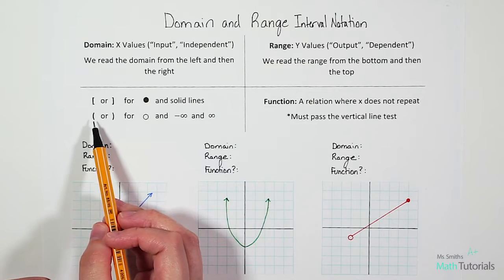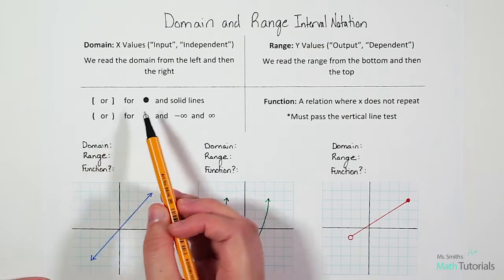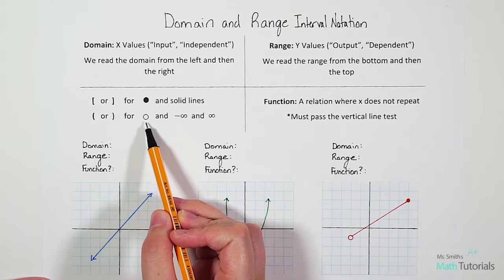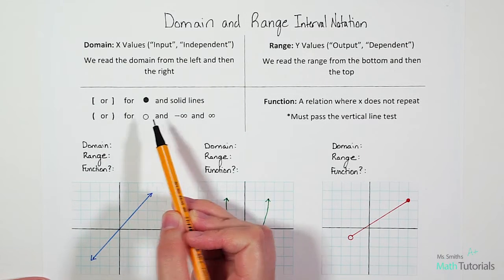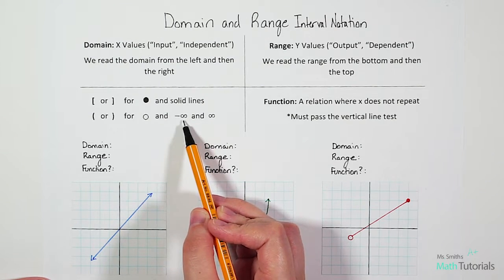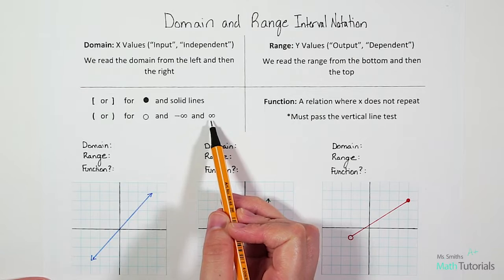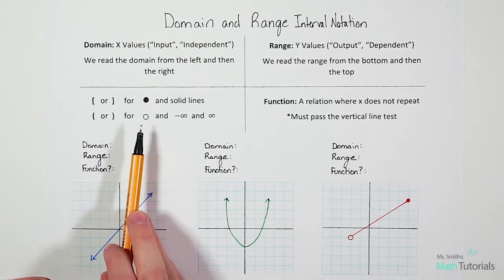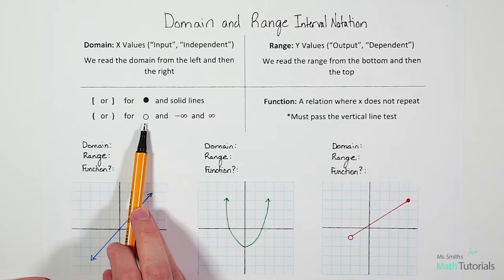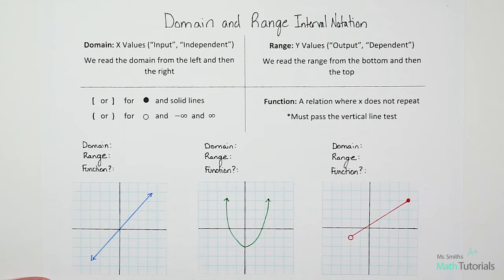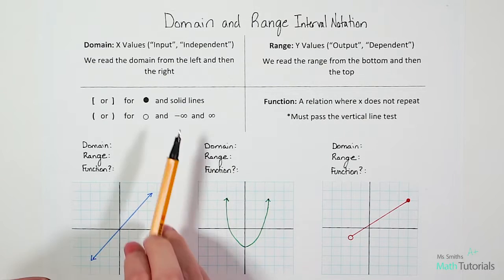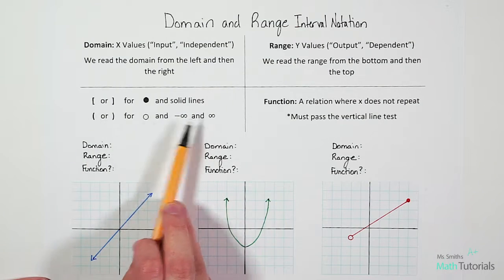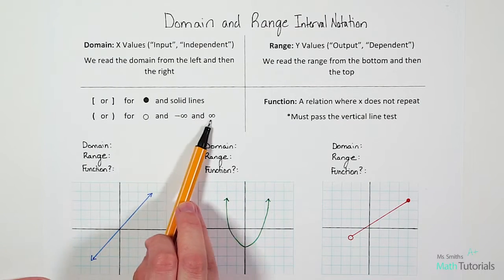We'll also use parentheses for open points and for negative infinity or positive infinity. The reason we use parentheses and not brackets is because the open circle shows a non-included point. Infinity is more of an expression — it just means that it keeps going on forever. Infinity is not a place or a point that we reach, which is why we always use parentheses for infinities.